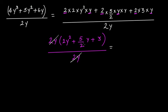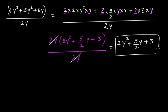Now you have 2y² + 5/2·y + 3. This is the quotient, or the answer of this division. Don't worry — these tricks and methods to solve by taking common factors, you will learn once you practice, practice, practice. Mathematics is all about practice.